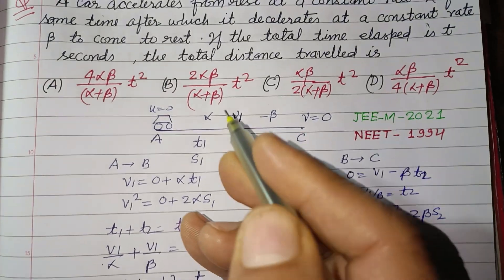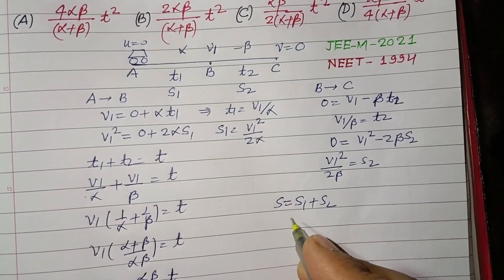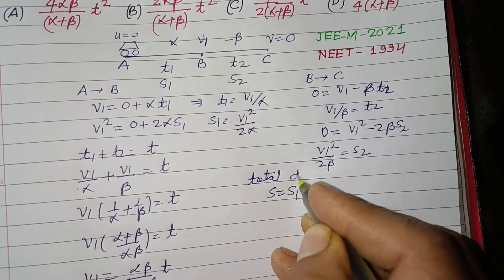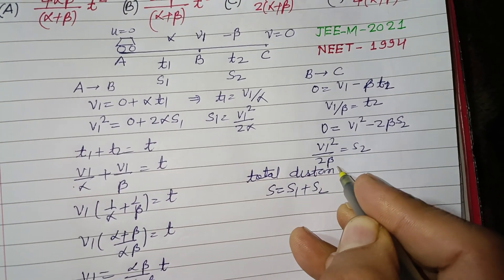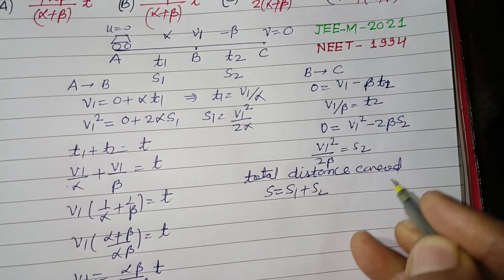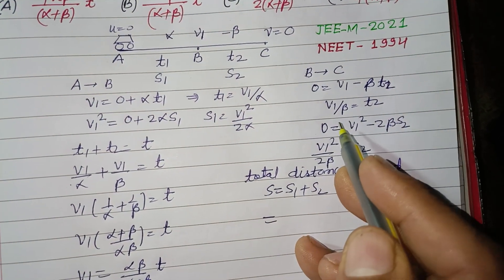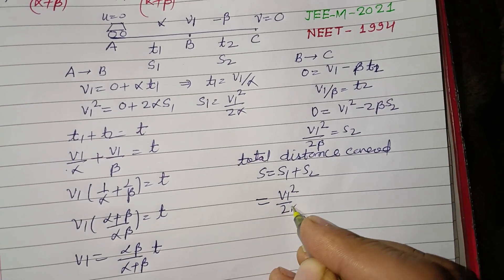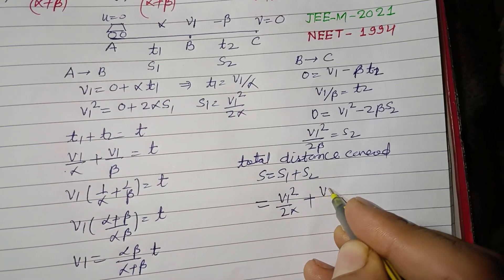We require the total distance covered. Total distance covered = s₁ + s₂. So s₁ is v₁²/(2α) and s₂ is v₁²/(2β).